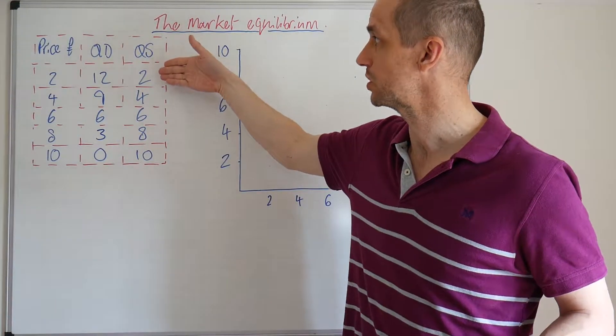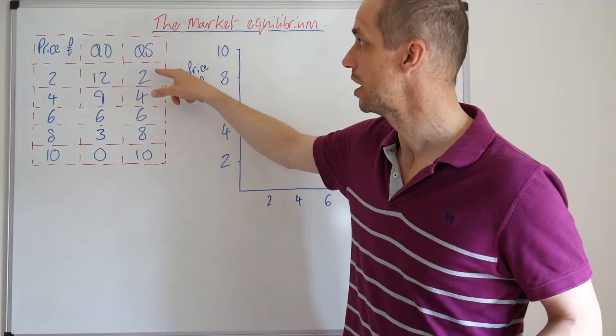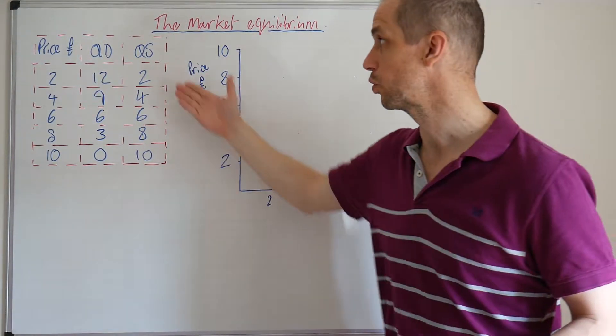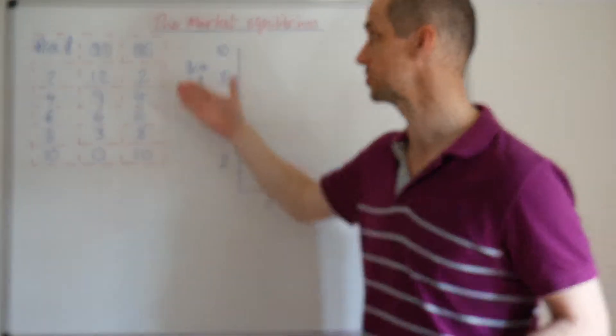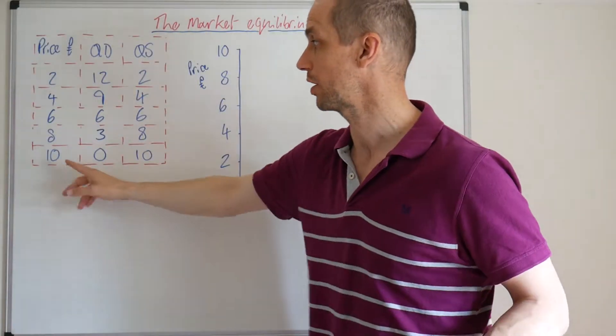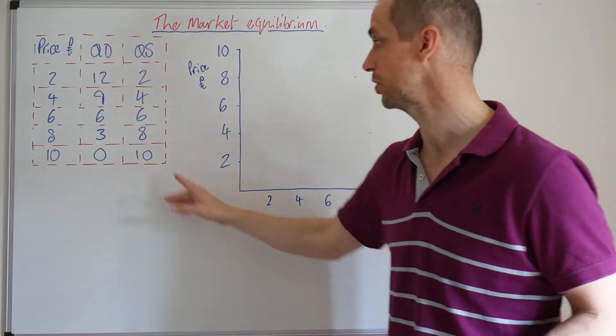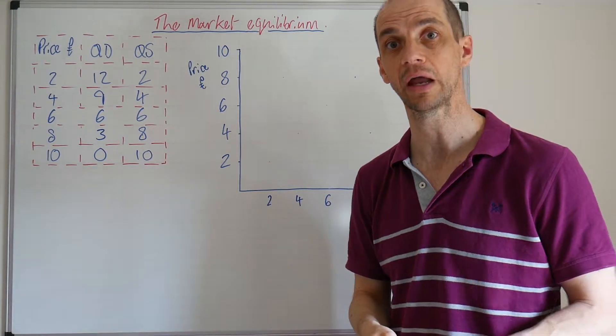Meanwhile, for the quantity supplied, we can see that a low price means that only a low quantity will be supplied by firms to the marketplace. Meanwhile, at a higher price of 10 pounds per unit, much higher quantity supplied will be available.